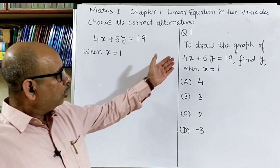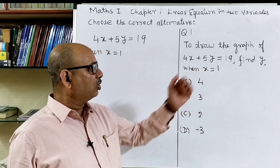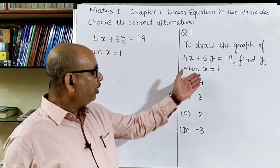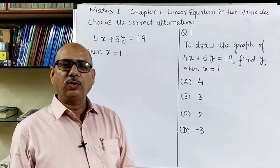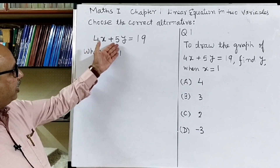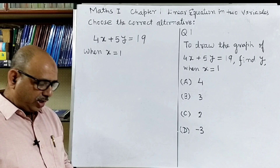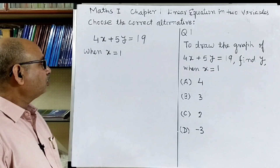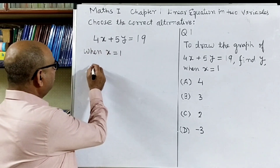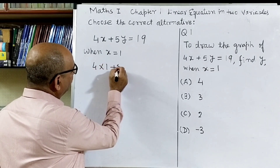The first question is: to draw the graph of 4x plus 5y is equal to 19, find the value of y when x is equal to 1. Write down the equation 4x plus 5y is equal to 19. When x is equal to 1, put the value of x equal to 1 in the given equation: 4 into 1 plus 5y is equal to 19.